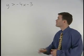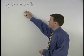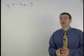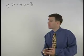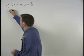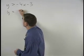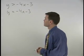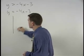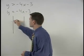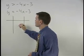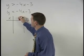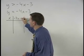To graph the inequality y is greater than negative 4x minus 3, we start by graphing what is called the boundary line, and in this case that's y equals negative 4x minus 3. So setting up our chart, we have our x's, our y's, and negative 4x minus 3.